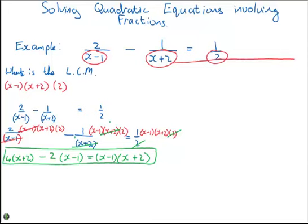So this one here goes to 4x plus 8 minus 2x, minus 2 by minus 1 is plus 2. Is equal to x times x plus 2 minus 1 times x plus 2.